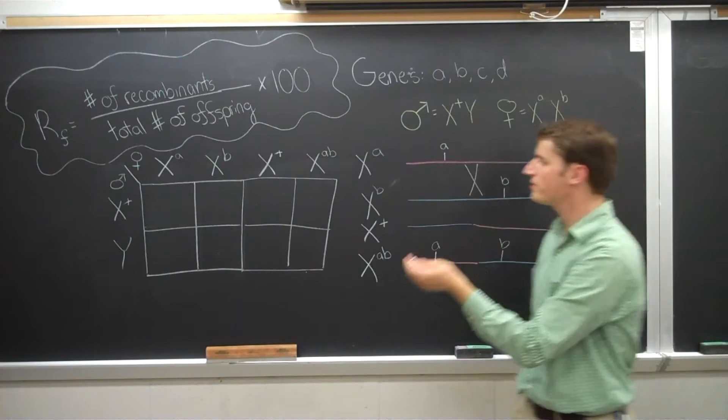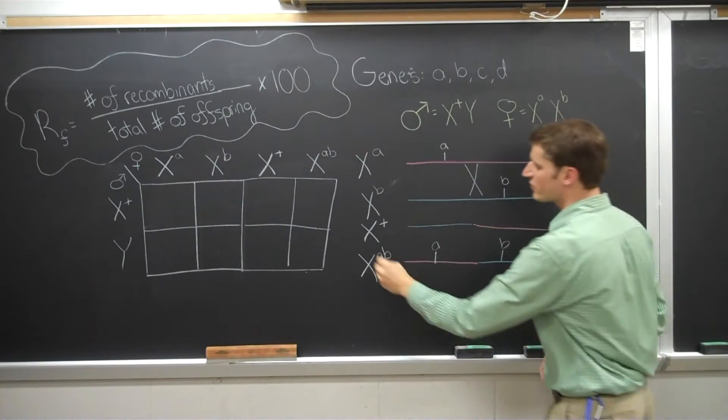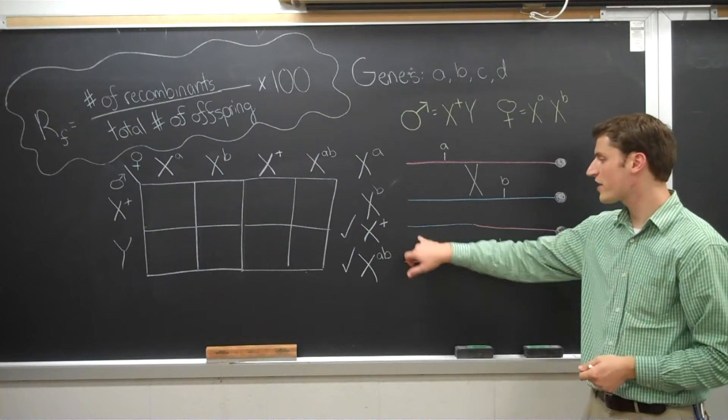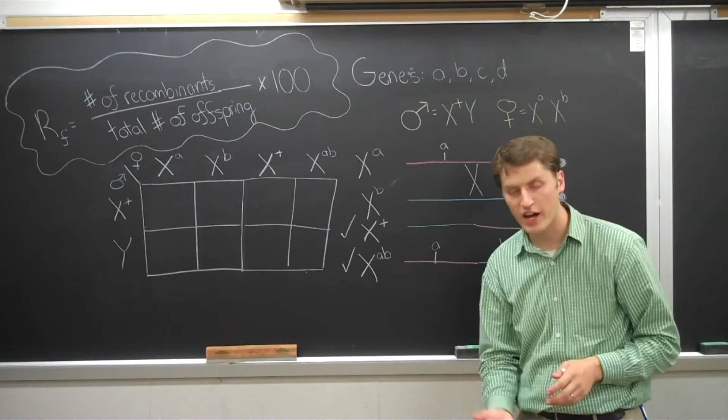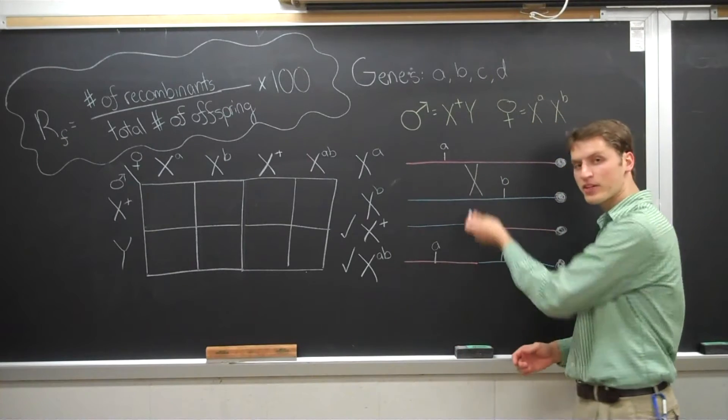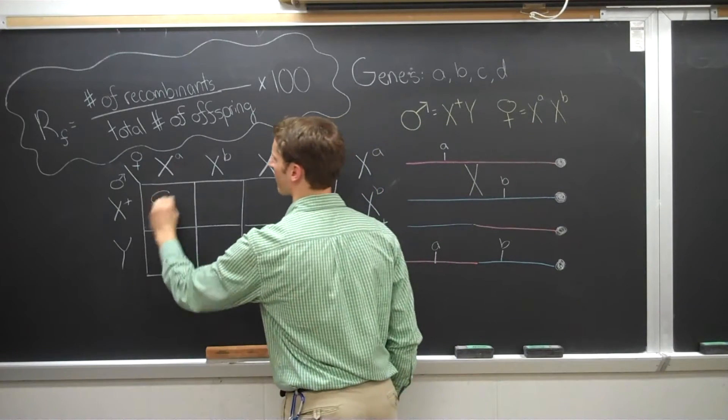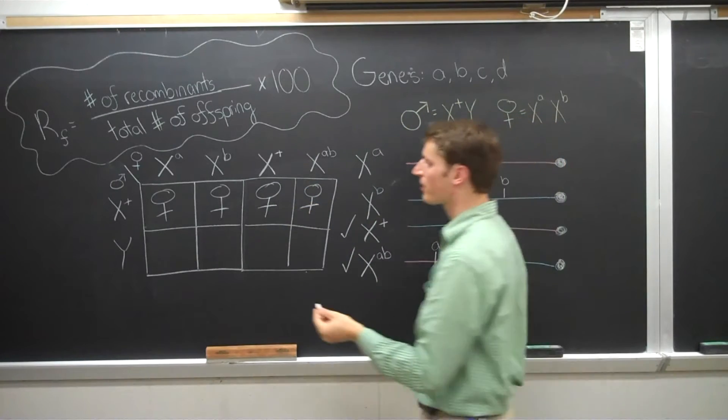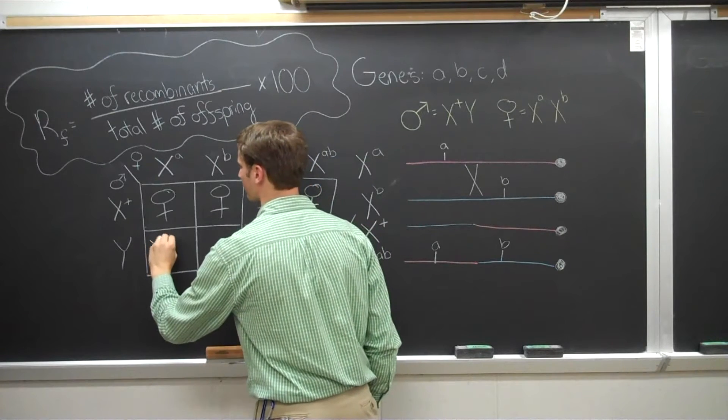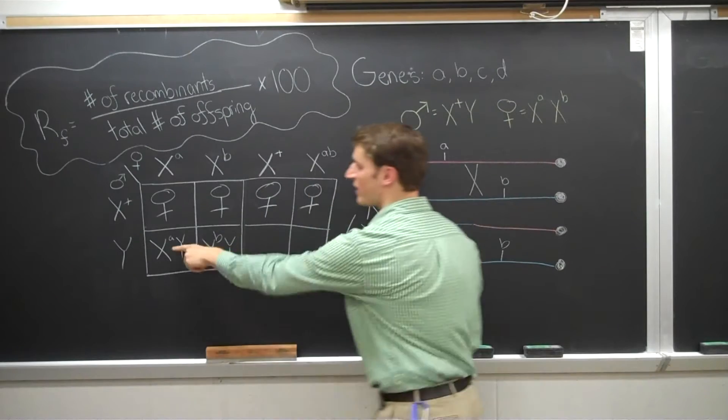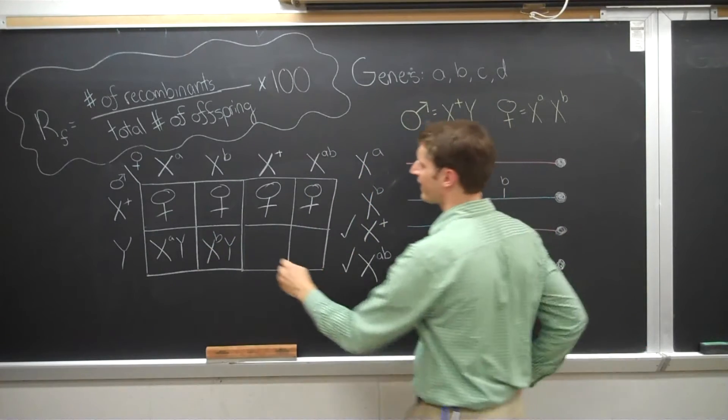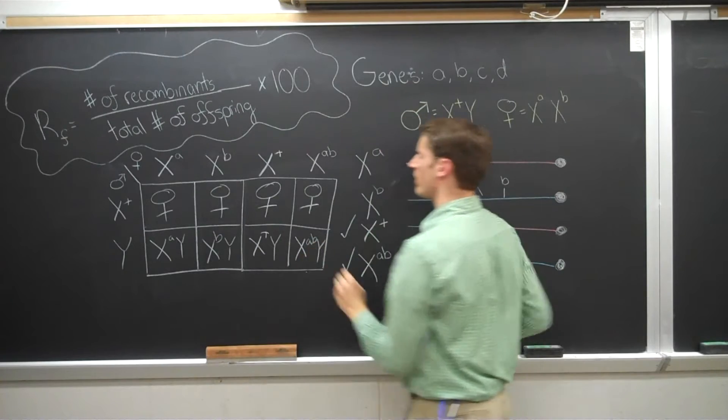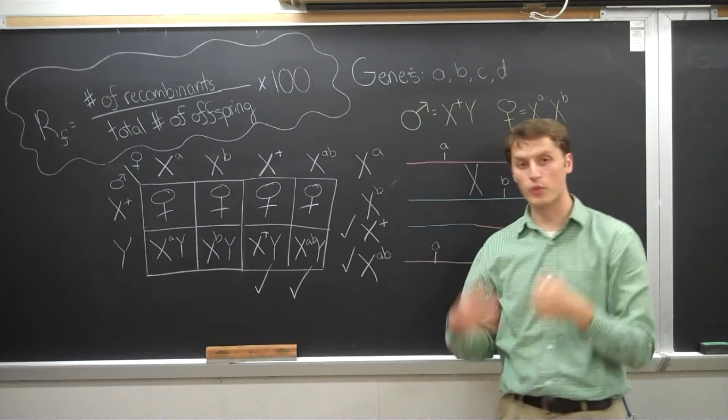Now, you fill this Punnett square out. Let me back up. These two are called the recombinant chromosomes. Any offspring that ends up with these X chromosomes, either one of them, would be considered a recombinant offspring. Why? Because recombination occurred. So I'm not going to concern myself with the females. These two males, they would all be wild types, so it wouldn't matter. We're looking at the males. These two males are the non-recombinant offspring. These two males are the recombinant offspring.